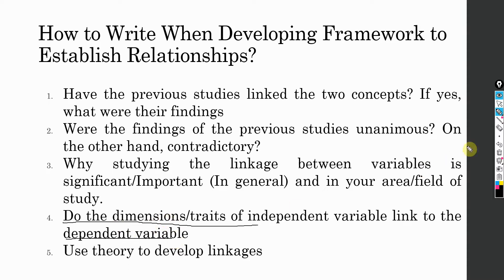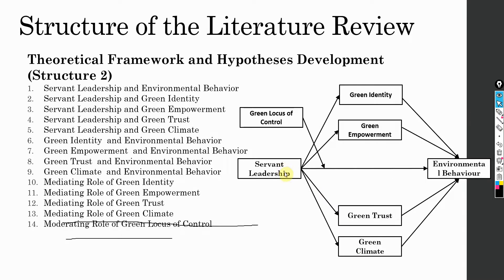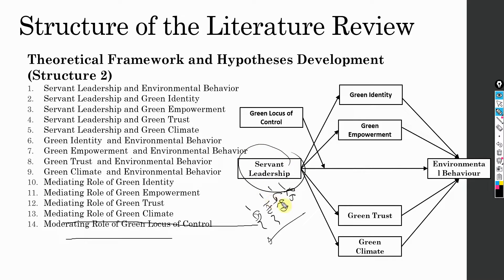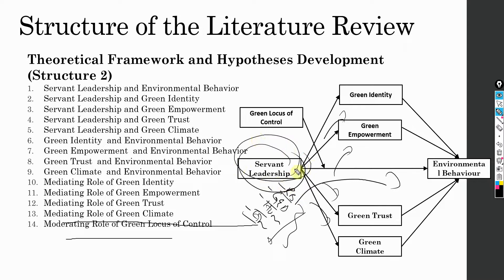What you do is you link the dimensions. Let's say we've got servant leadership here. Servant leadership is all about relationship building, growth and development of employees, being humble, being ethical — and there are other dimensions as well. You have to look into how you have operationalized servant leadership; you can't just include all the dimensions. Then what you do is you try to link these sub-dimensions with the environmental behavior or other variables if you cannot find any existing research. This is how you build an argument that yes, there is a relationship between servant leadership and these variables.